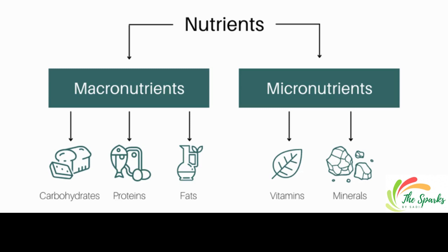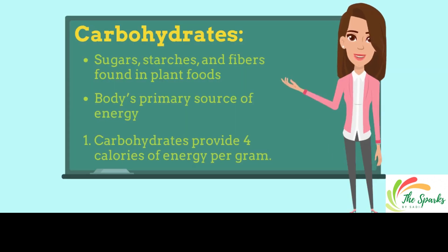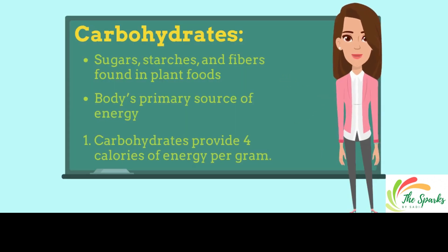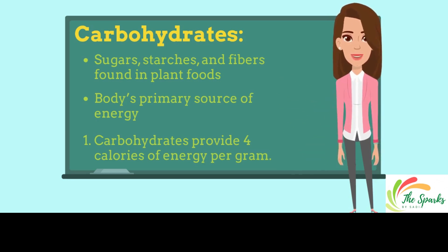Carbohydrates, proteins, and fats fall under macronutrients, while vitamins and minerals are micronutrients. Carbohydrates are the sugars, starches, and fibers found in plant foods and are the body's primary source of energy.